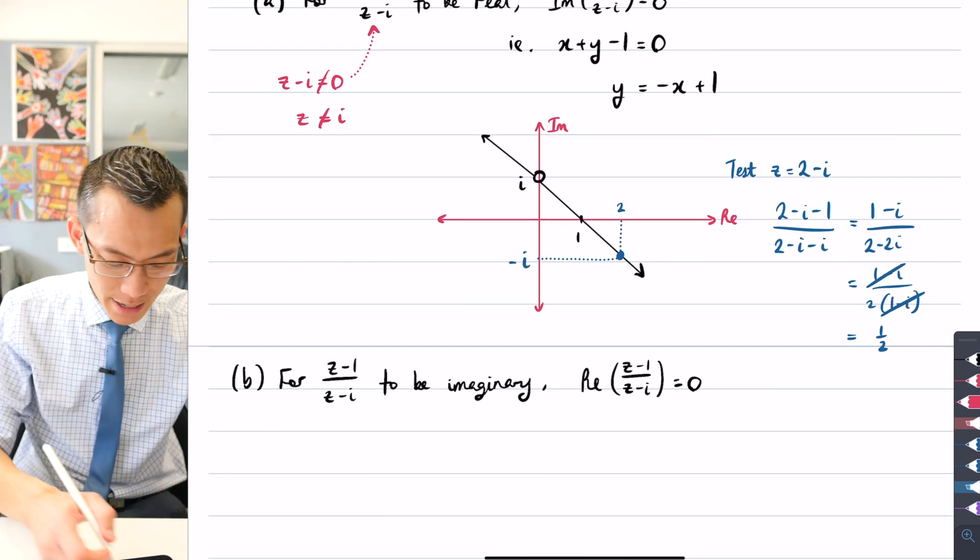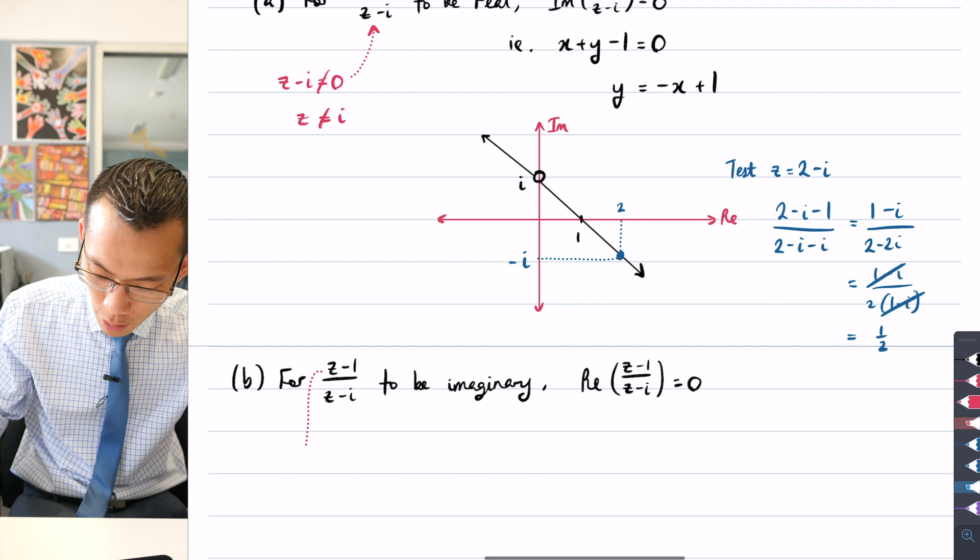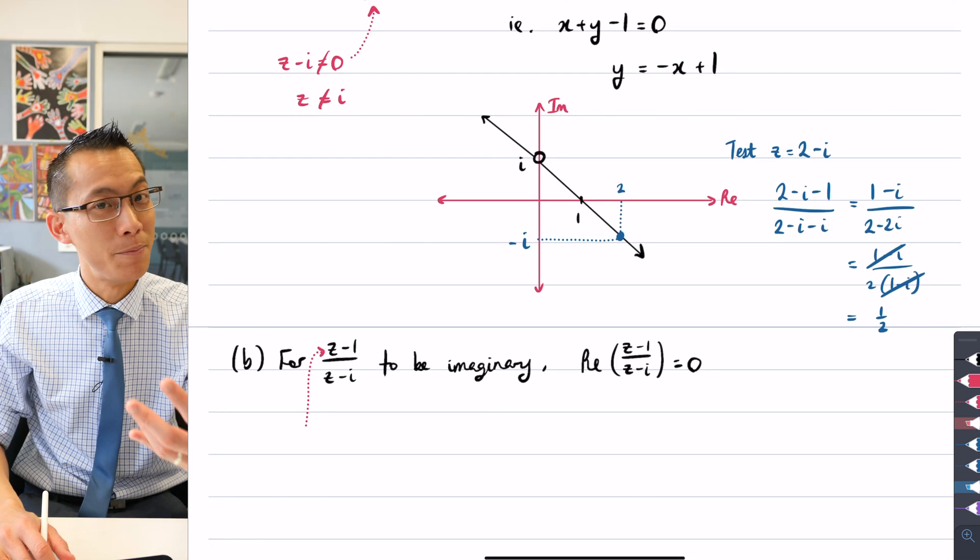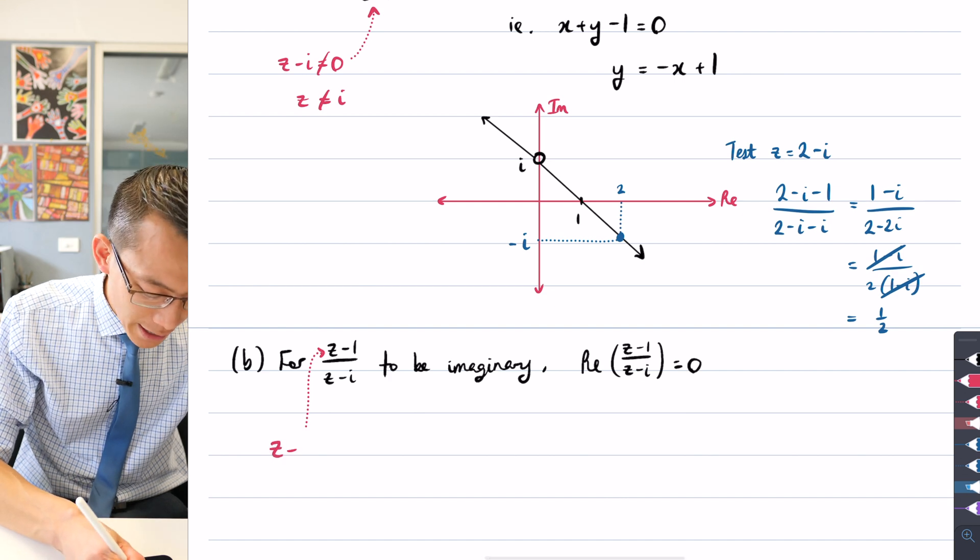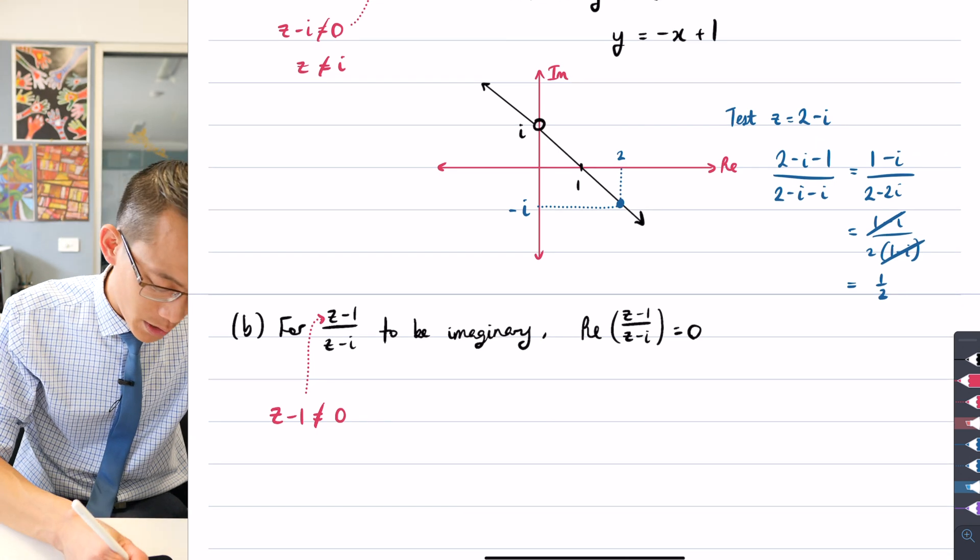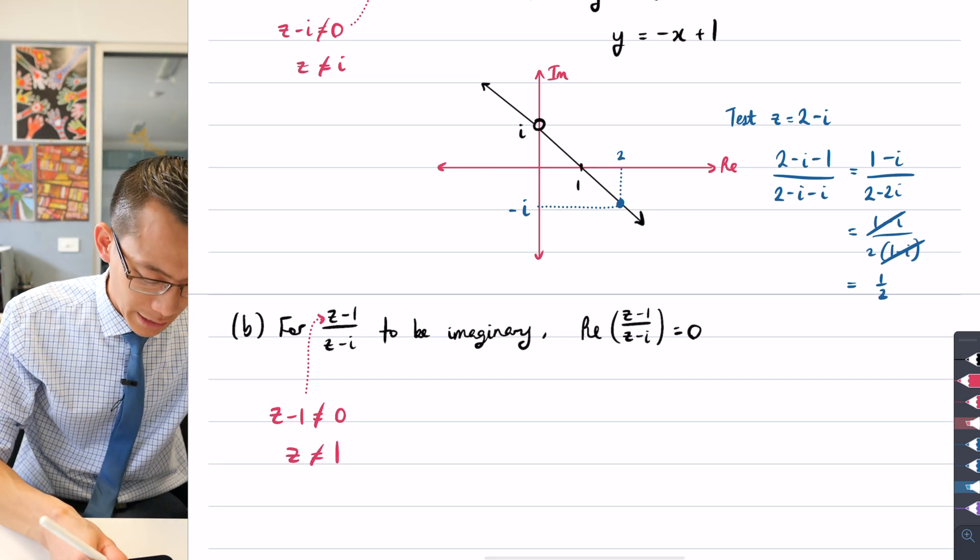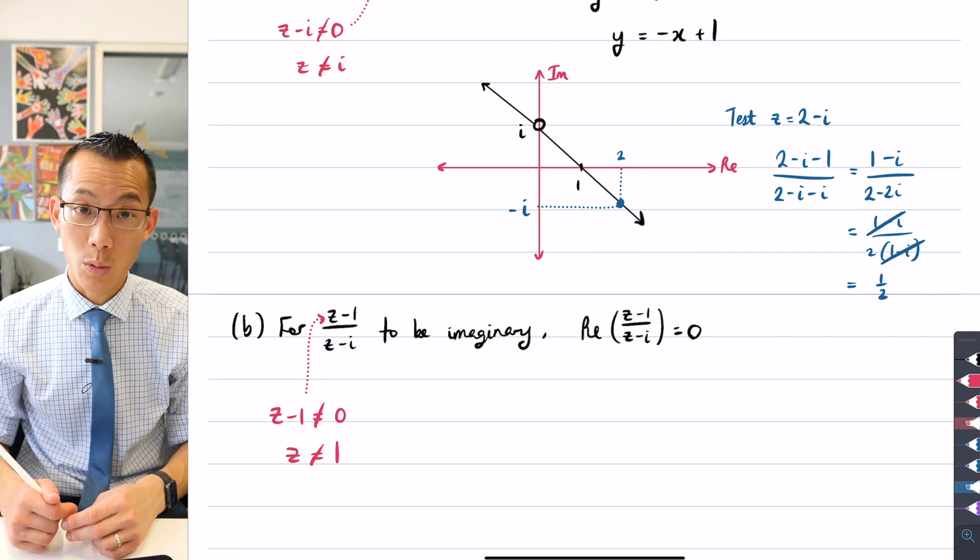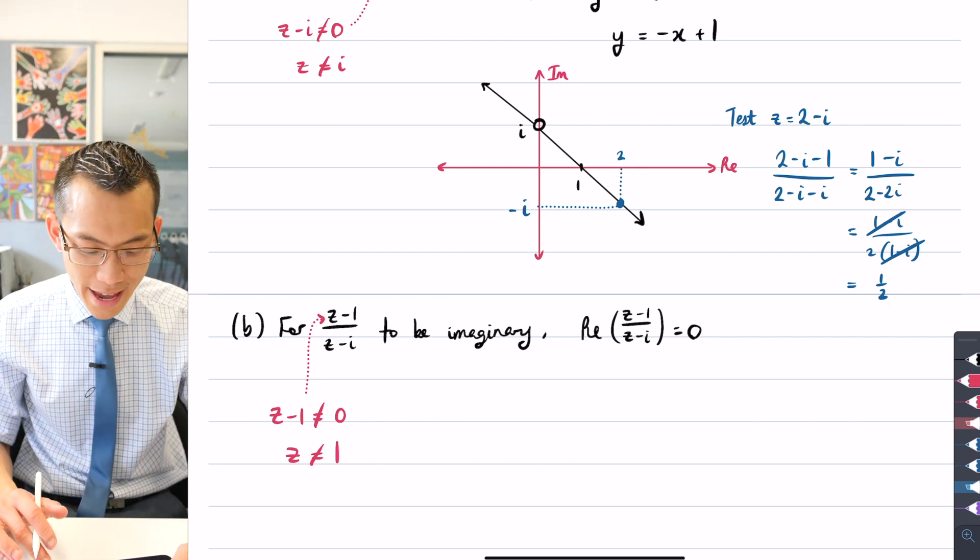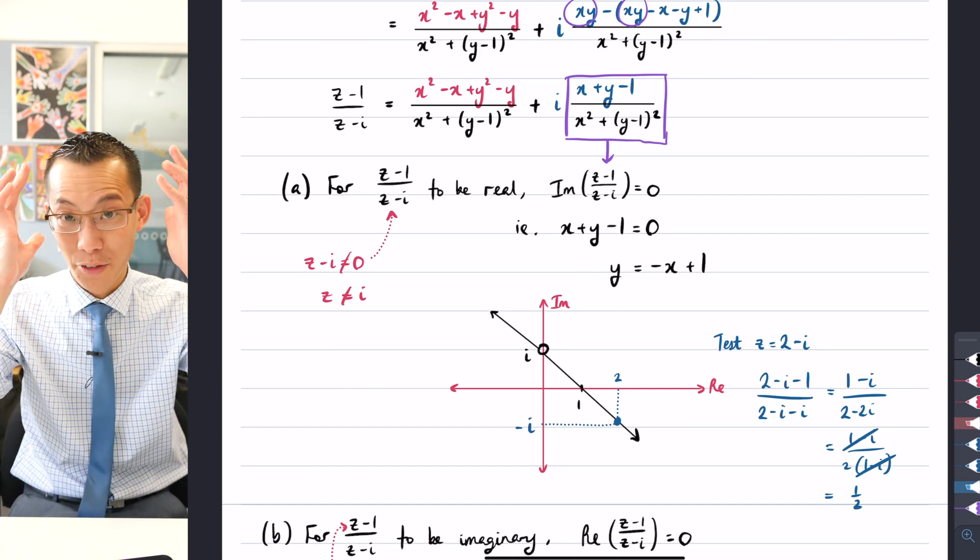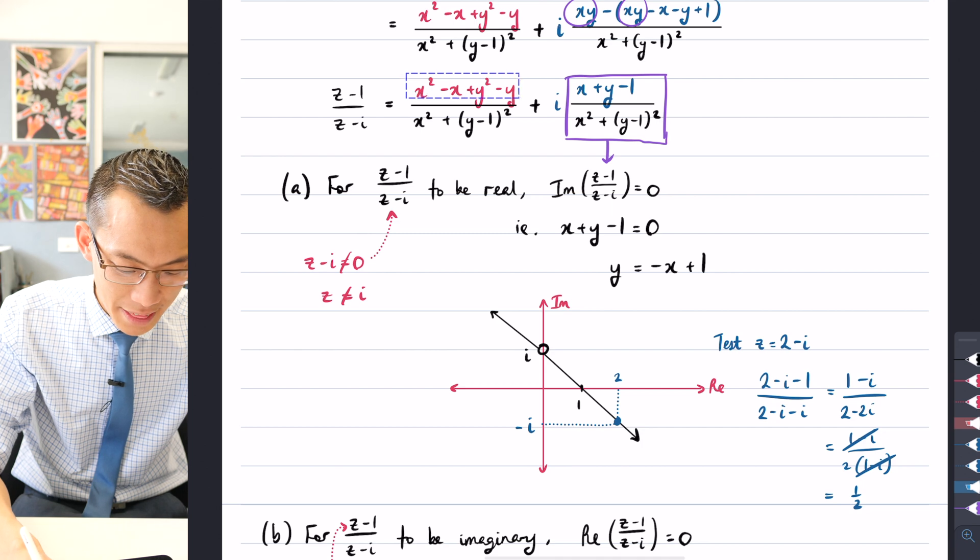So therefore, I have to say, there's actually a problem not just from the denominator, but there's also a problem from the numerator. I can't let the numerator equal zero, because that would not be an imaginary number. So I am now also excluding, in addition to excluding z equals i, I have to exclude z equals 1. So from there, now that I've noted my domain discontinuities.